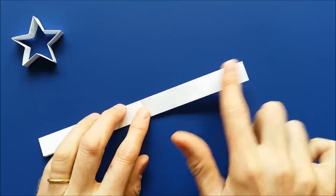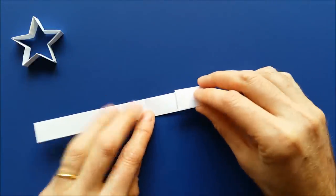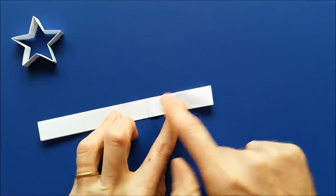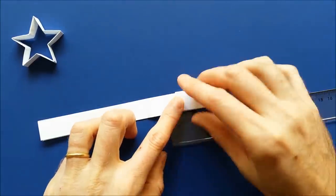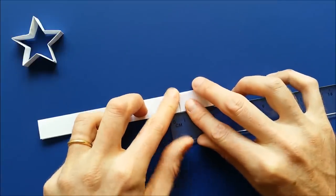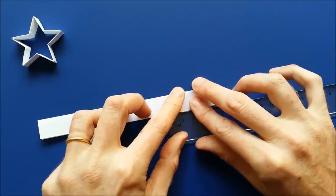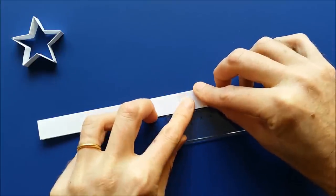And then we are going to divide this part into thirds. So you can do it visually. This part should be equal to this part. But it's better to use a ruler. So I'm using 21 cm paper, so I should have about 3.5 cm here.